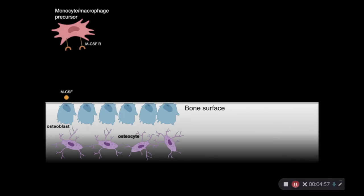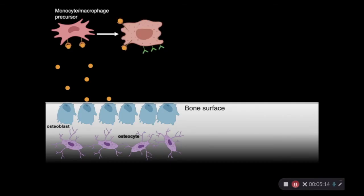So, osteoblasts are going to release this M-CSF, and I've shown this here by these orange circles, and they will eventually bind to the M-CSF receptor on this precursor cells. And that binding is going to initiate a cascade of events. One of those events is that these precursors are now going to express a second receptor, and that's the RANK receptor, which I've shown here in green. And so, at this point, we're going to consider this progenitor or precursor cell an osteoclast precursor.